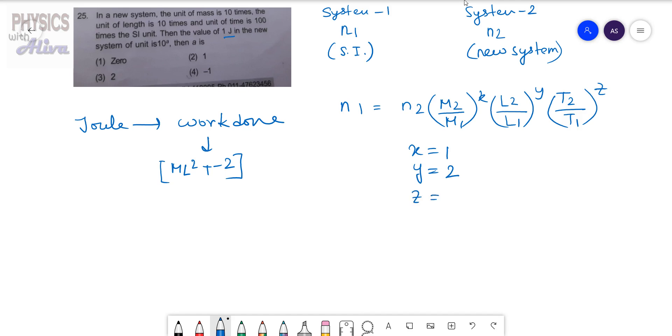Right, so our new equation is n₁ equals n₂ times (m₂ by m₁) to the power 1, (l₂ by l₁) to the power 2, (t₂ by t₁) to the power minus 2.